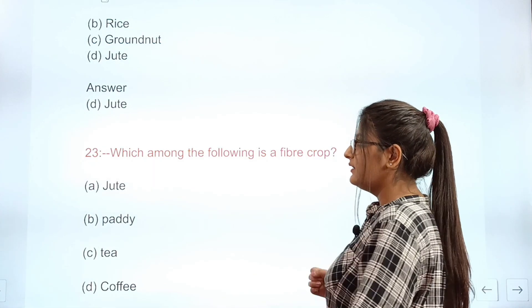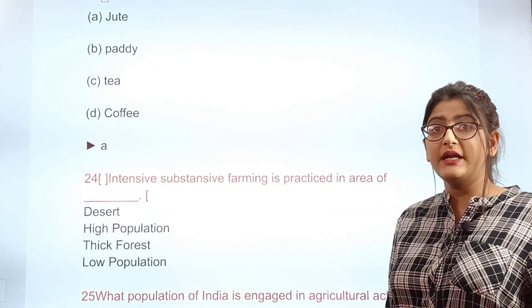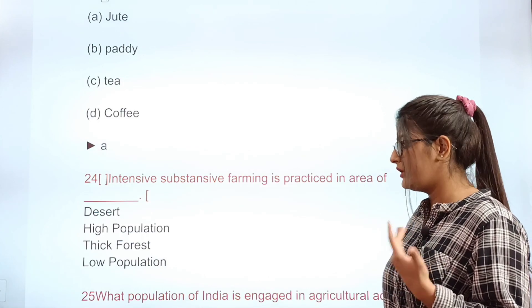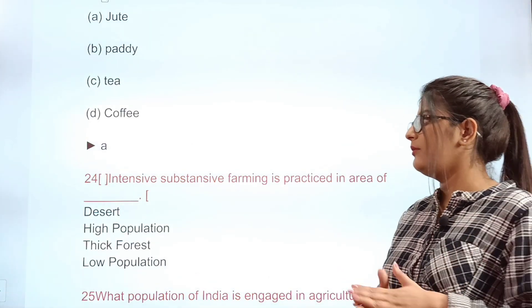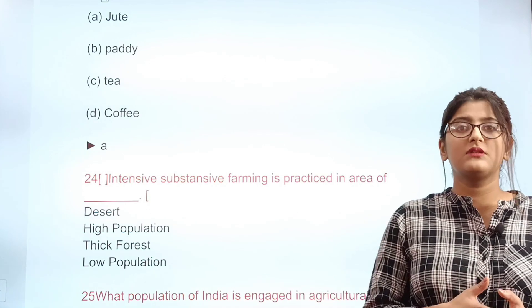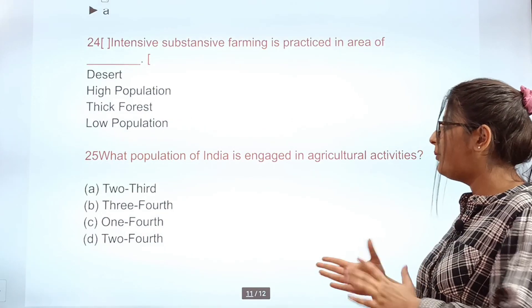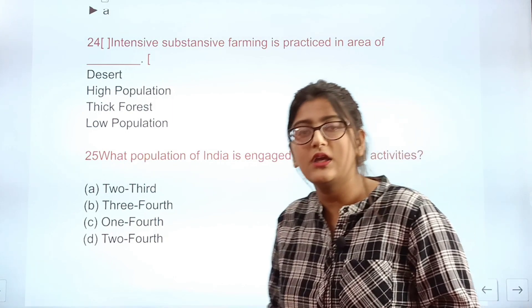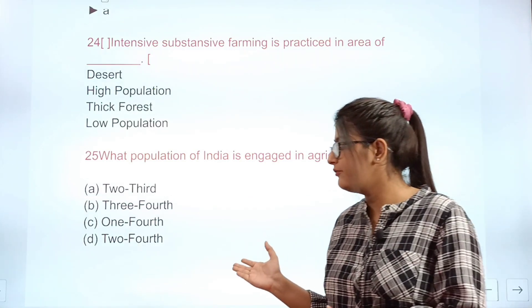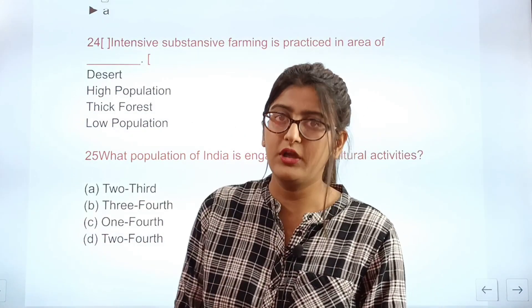Question 24: Intensive subsistence farming is practiced in areas of what? Options: A desert areas, B areas with high population, C areas with thick forest, D areas with low population. The correct answer is B — areas with high population. Question 25: What percentage of India's population is engaged in agriculture activity? Options: A two-thirds, B three-fourths, C one-fourth, D two-fourths. The correct answer is A — two-thirds.